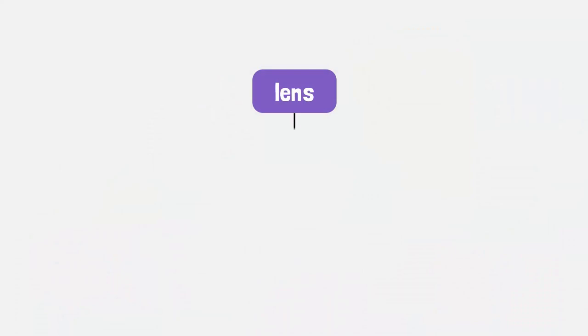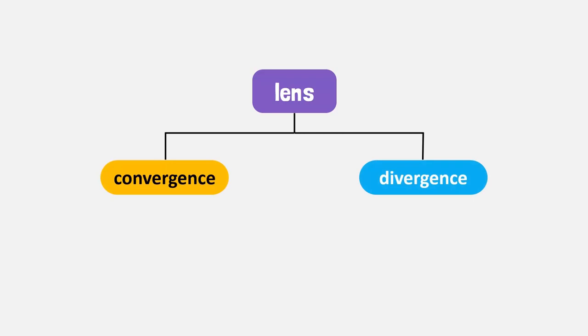There are two patterns, convergence and divergence. Before discussing these patterns, we first need to understand how light is refracted by a lens.